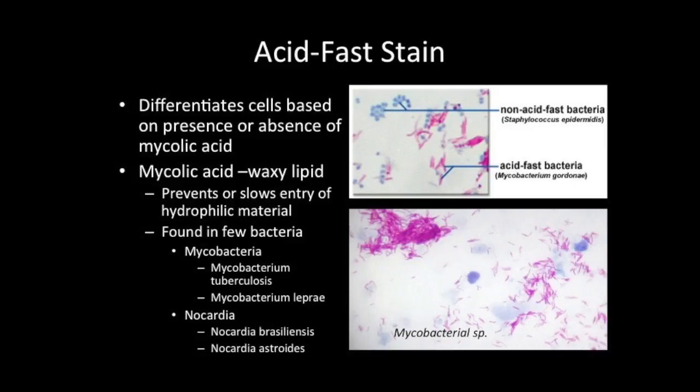In addition to members of these two genera of bacteria, the acid-fast stain may also be used to detect protozoan parasites within the genus Cryptosporidium. The acid-fast stain is not used as frequently as the Gram stain because few bacteria contain mycolic acids; however, it is a very important tool utilized when the infection is believed to be caused by an acid-fast organism.